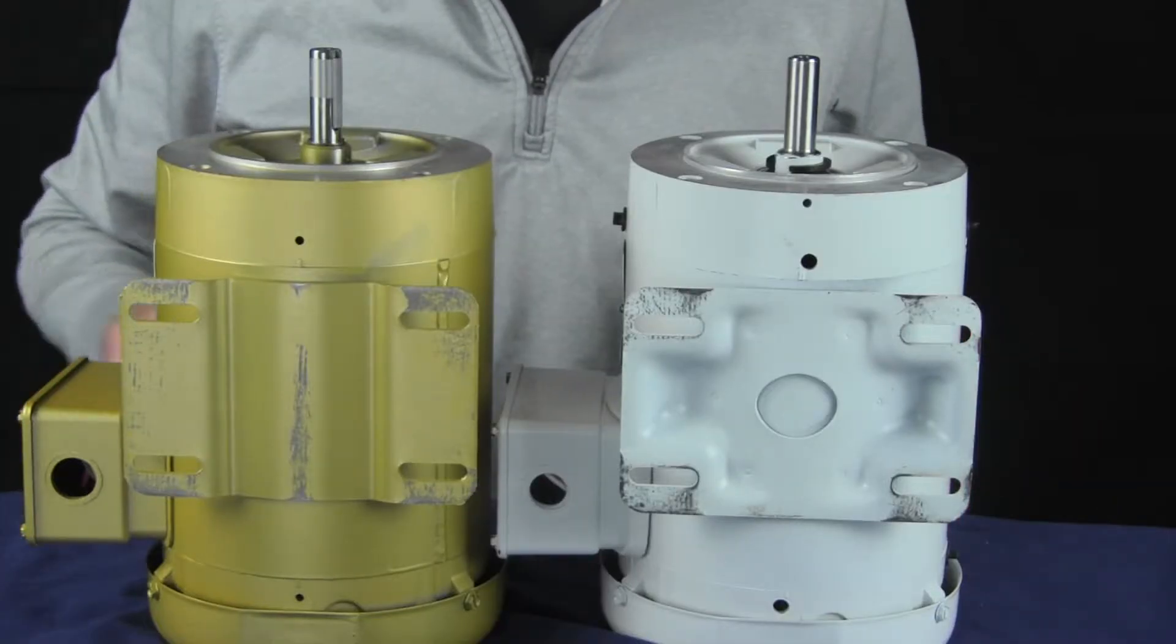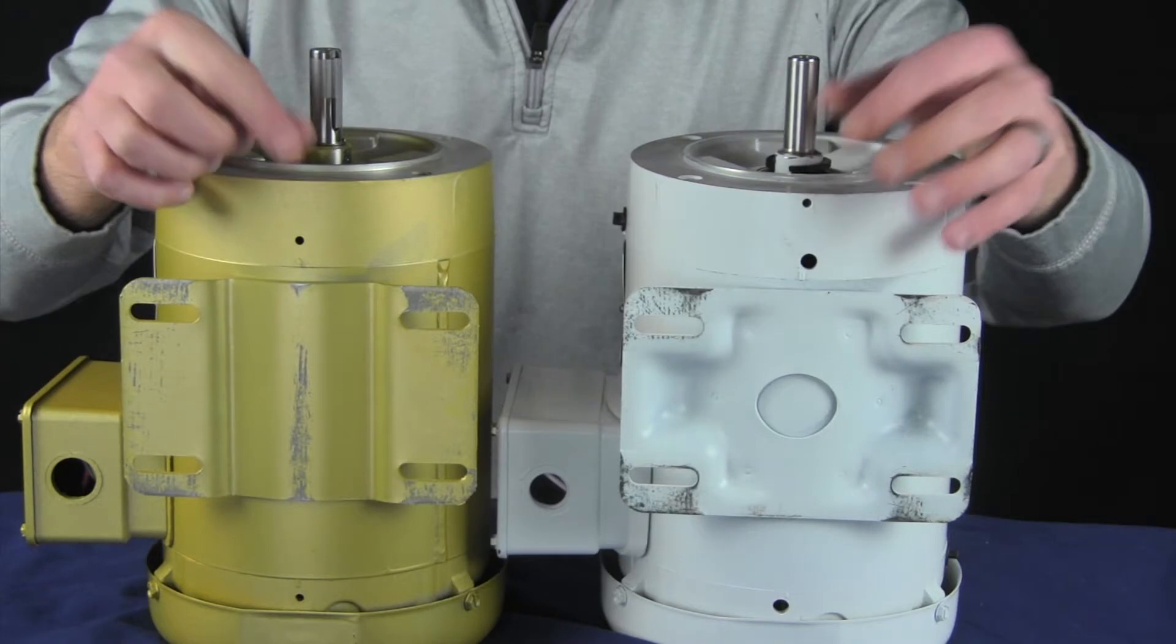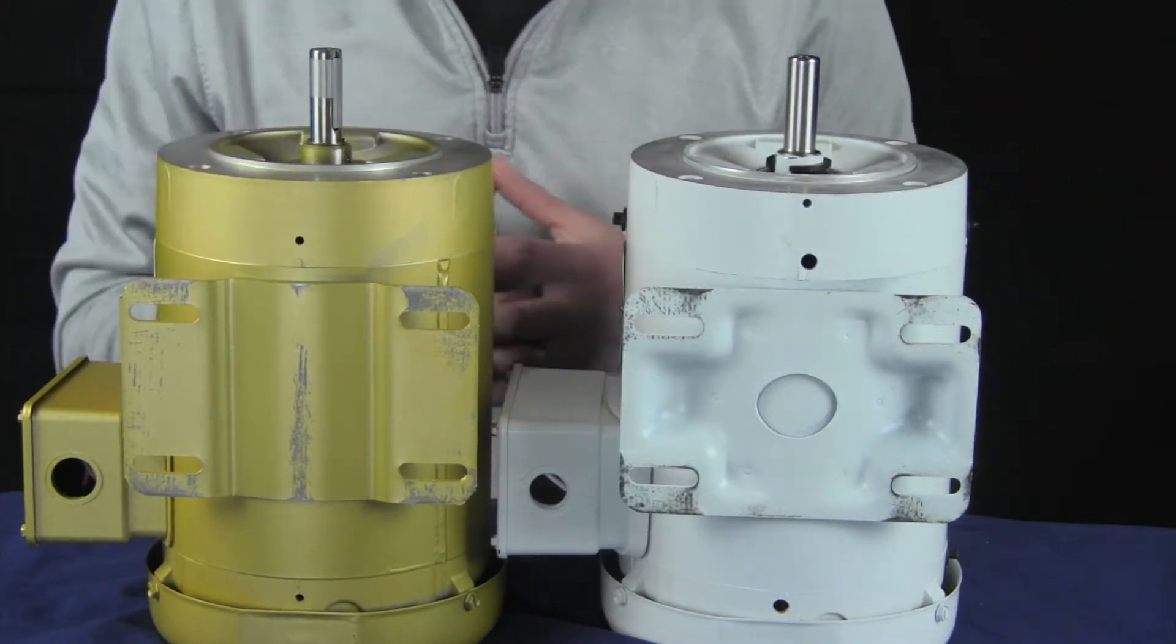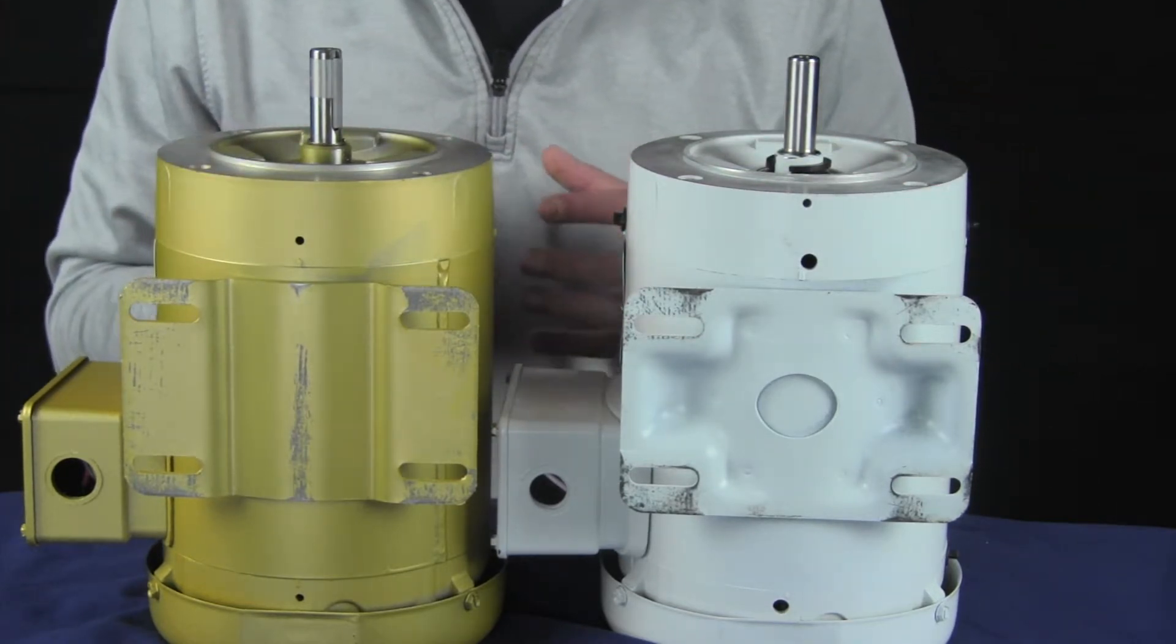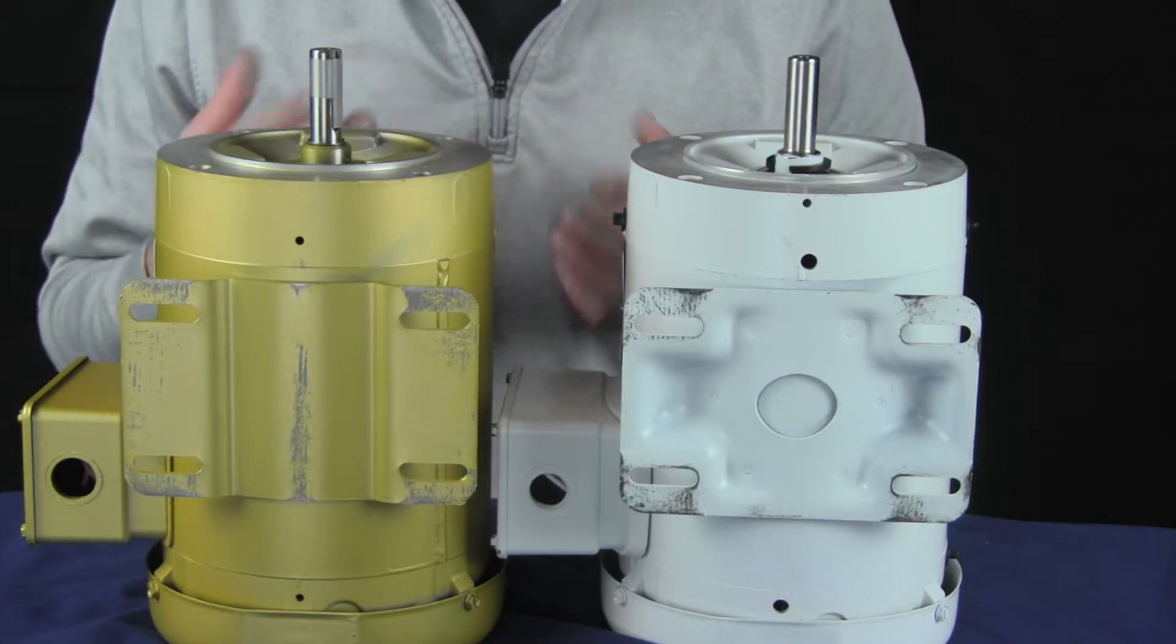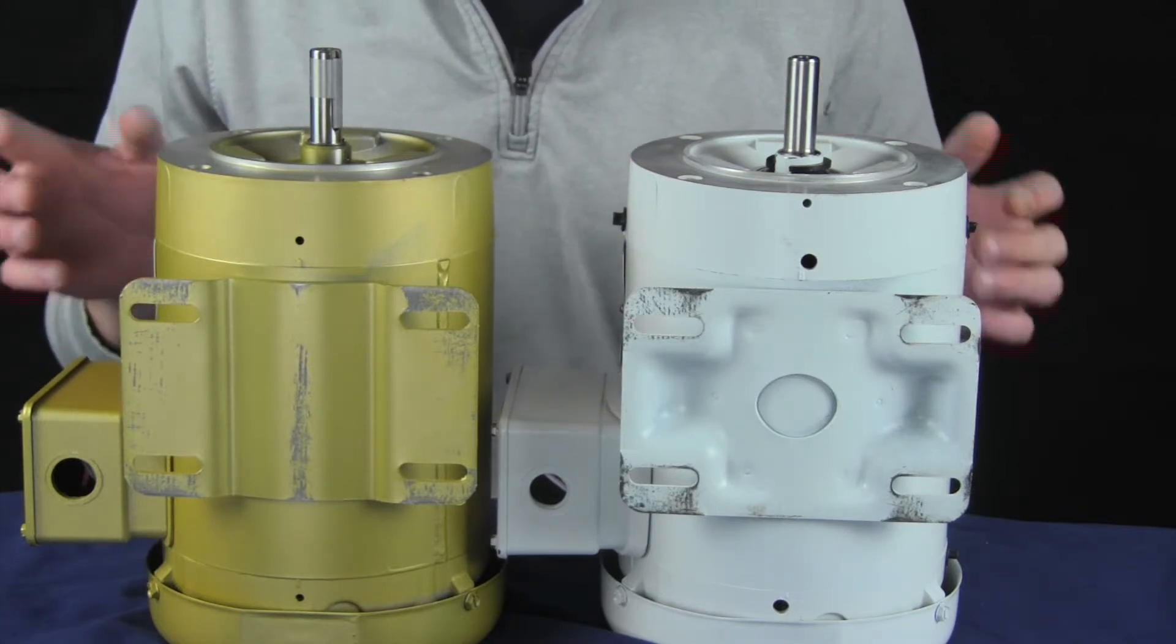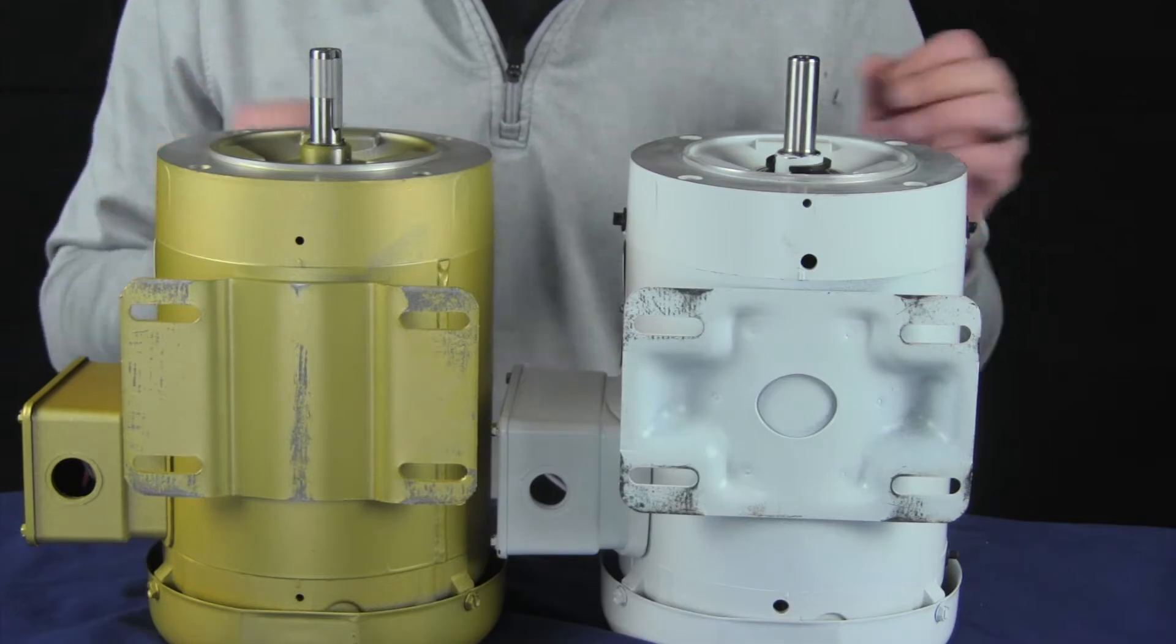They will also have small drain holes on the bottom of the motor, and that is so if condensation builds up inside the enclosure they'll be able to drain. So when you see those, don't think that there's a bolt missing. Those are meant to be there.